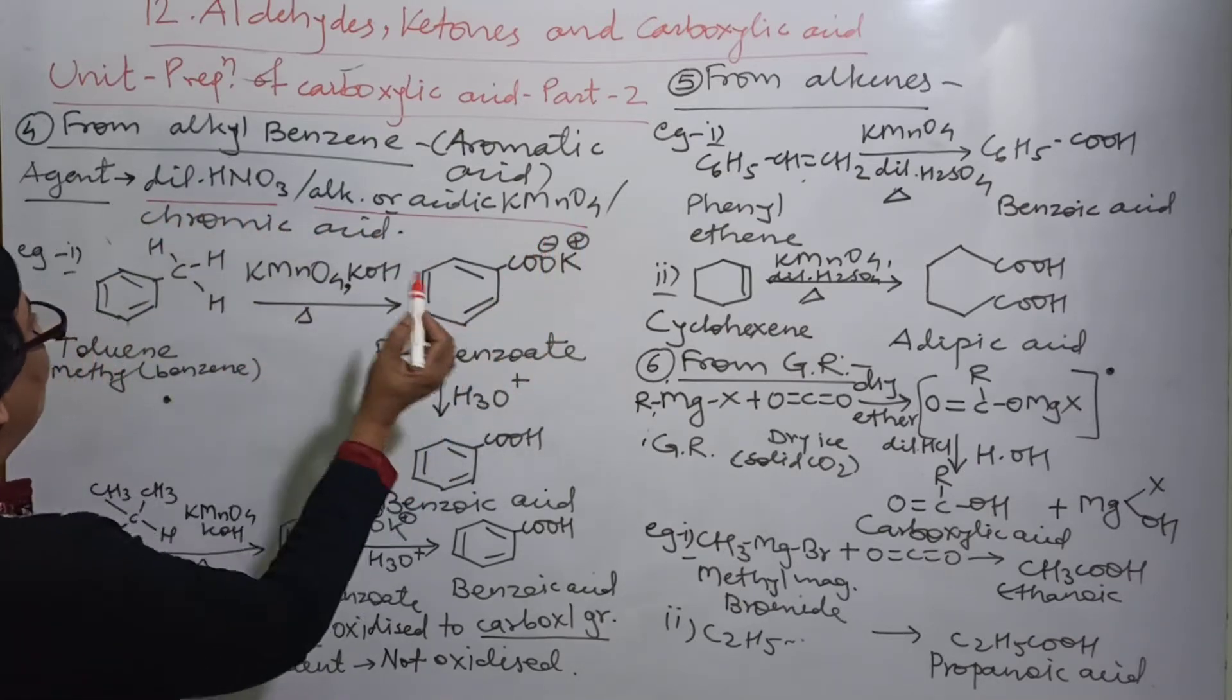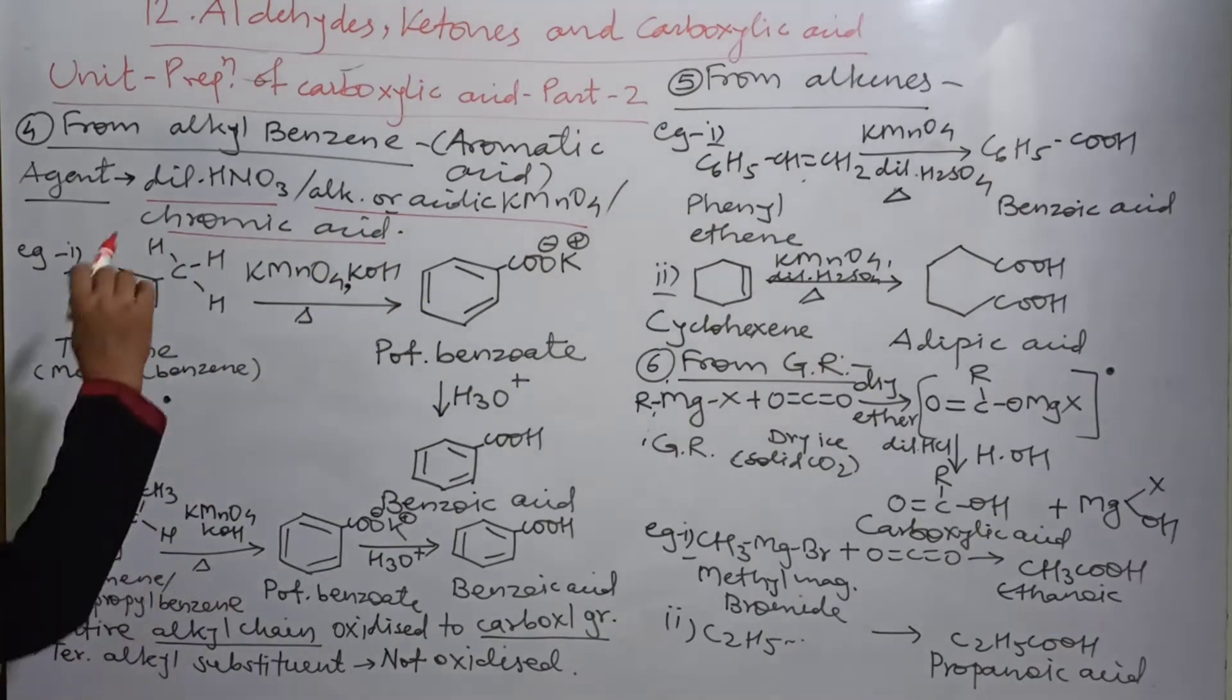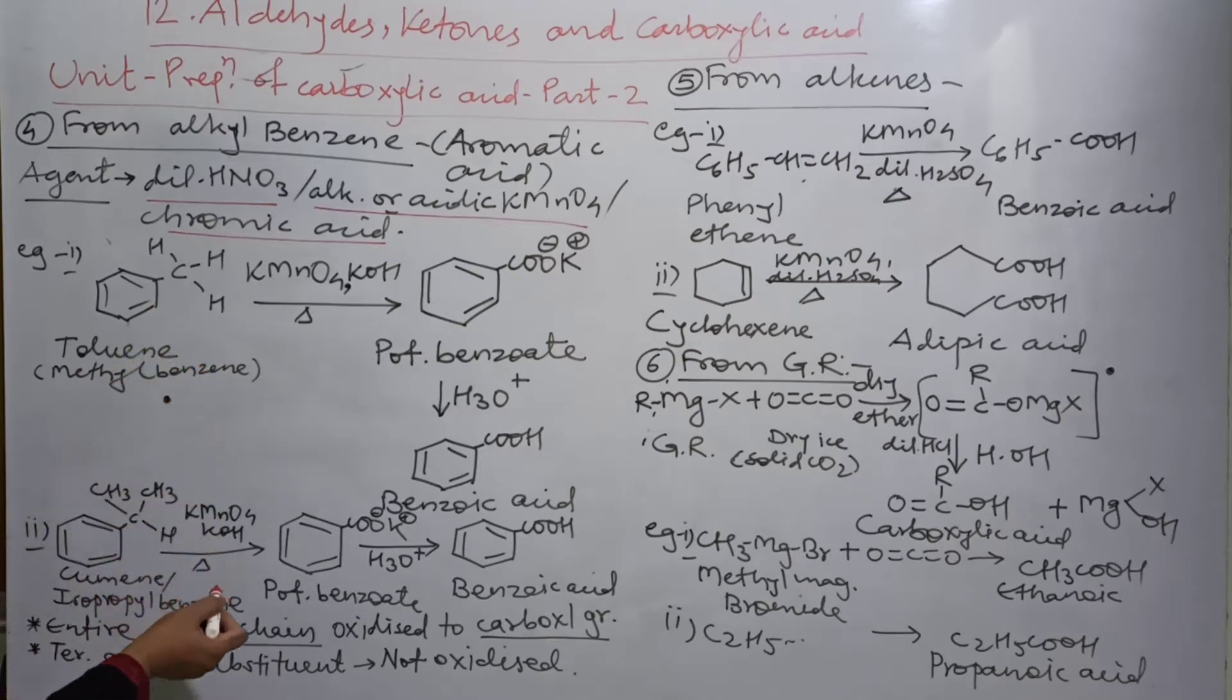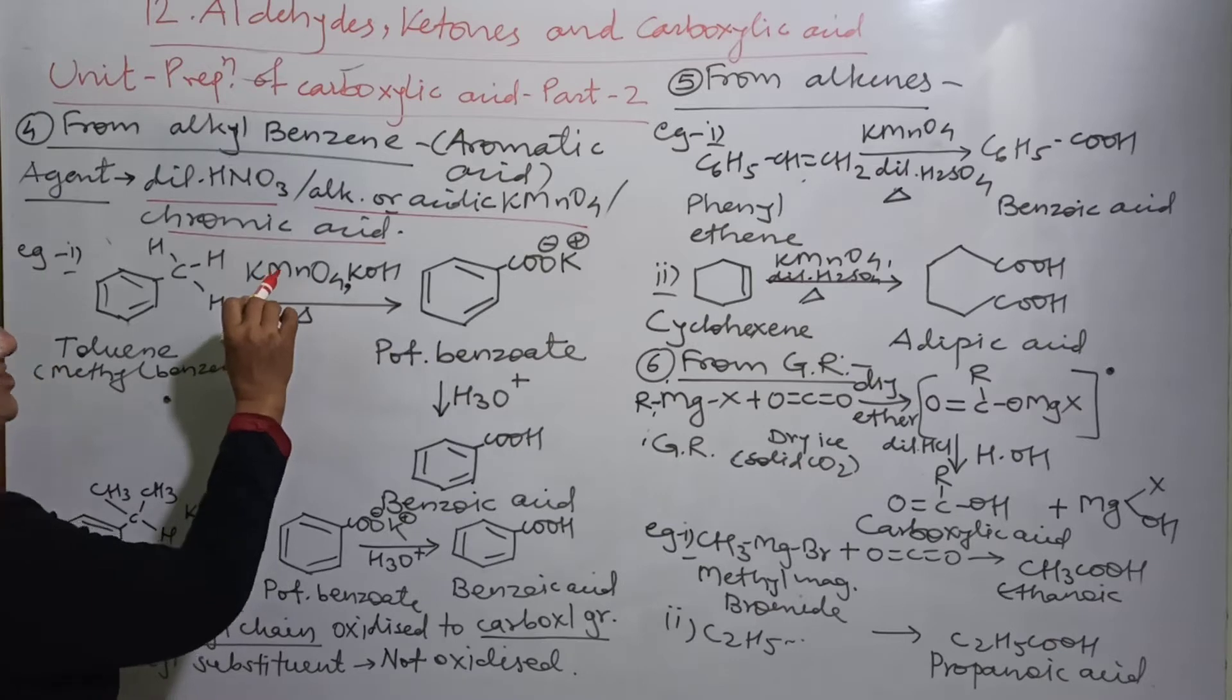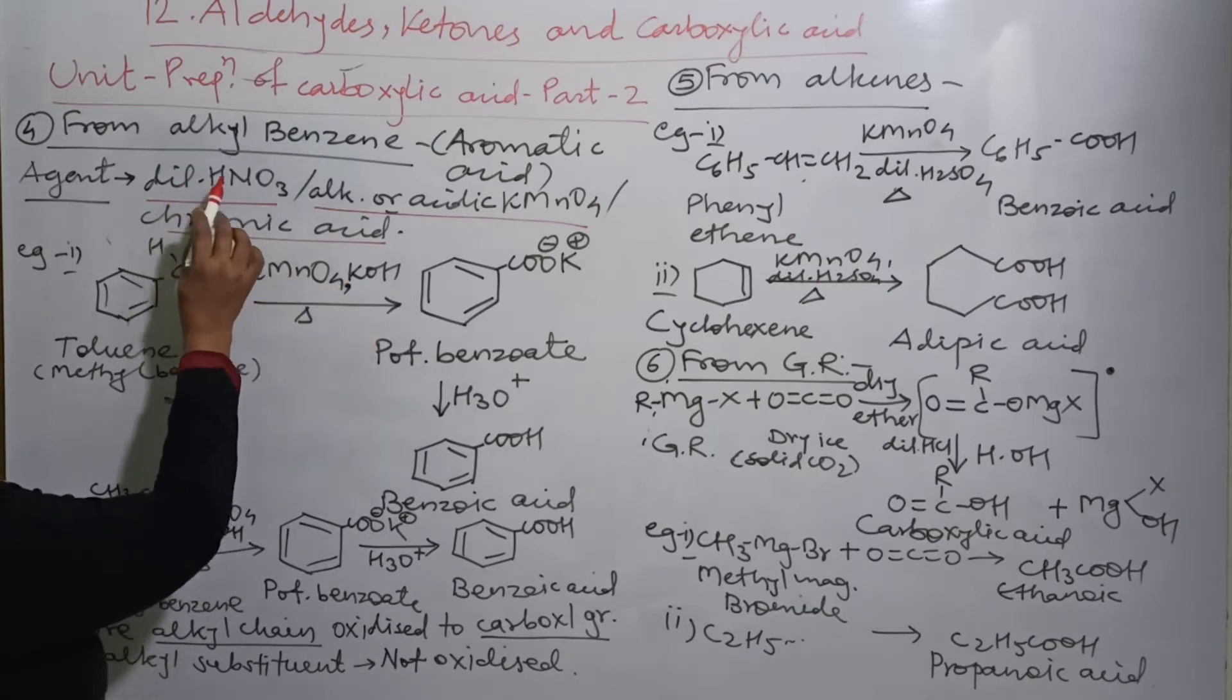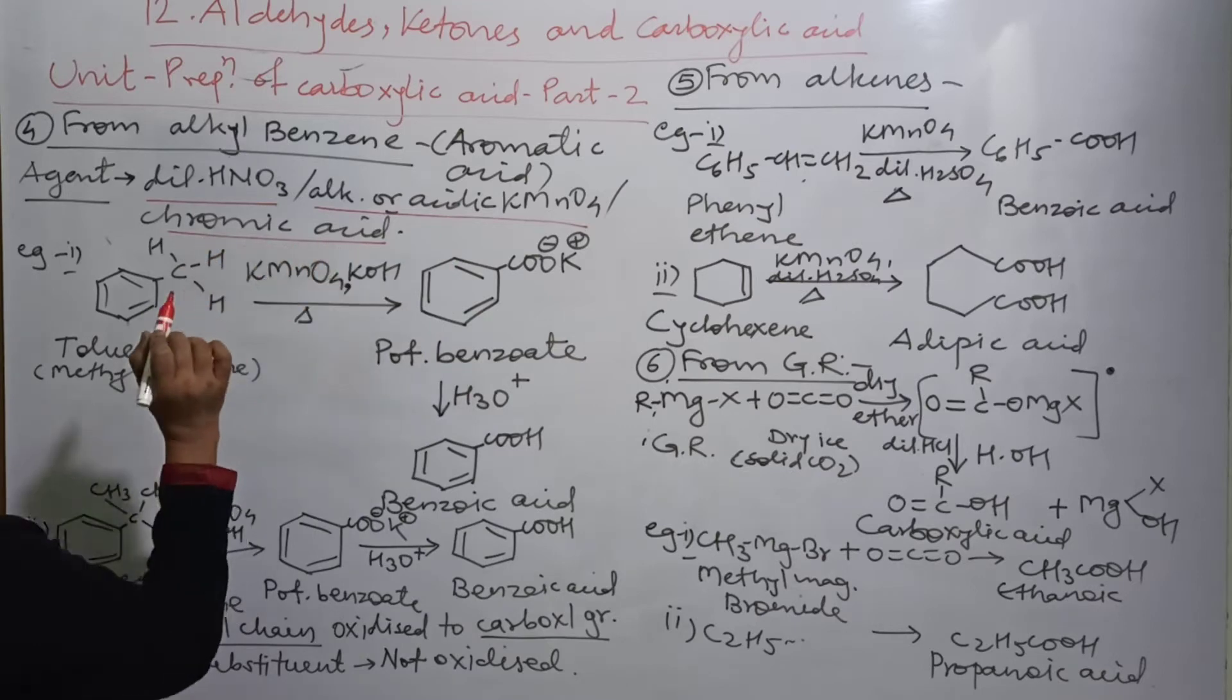The different oxidizing agents used can be dilute nitric acid, alkaline or acidic KMnO4, or chromic acid. You have to remember all these three because when you write these reactions, here only one reagent is written but can be replaced by dilute nitric acid, alkaline or acidic KMnO4, or chromic acid.